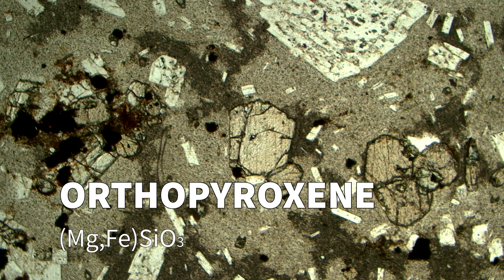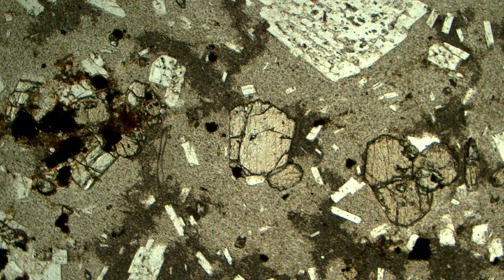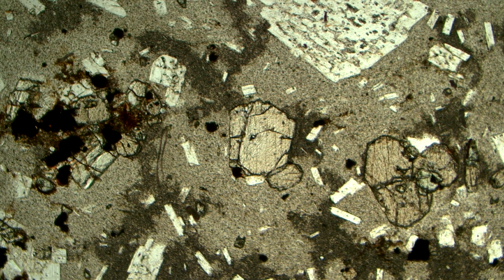Here are some of the optical properties of orthopyroxene, a common mineral in igneous rocks. This is a thin section of an andesite in plain polarized light. Orthopyroxene can be seen in the high-relief euhedral crystal in the very center of the screen.